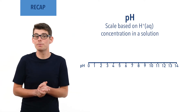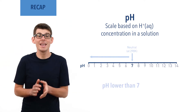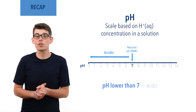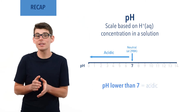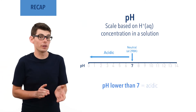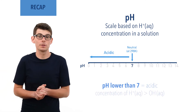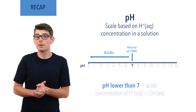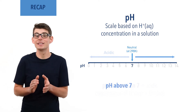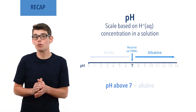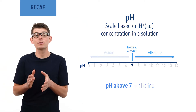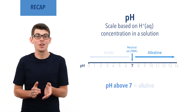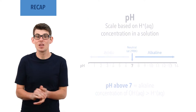A solution with a pH below 7 is acidic and the concentration of H+ ions or protons in the solution is greater than the concentration of hydroxide ions. A solution with a pH above 7 is considered alkaline and the concentration of hydroxide ions in the solution is greater than the concentration of H+ ions. Recap done? Let's go!